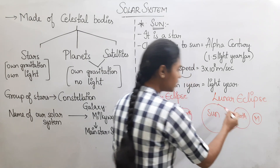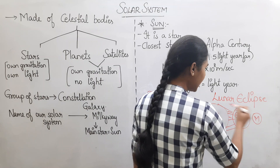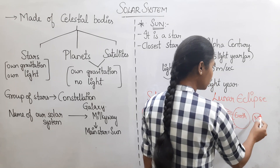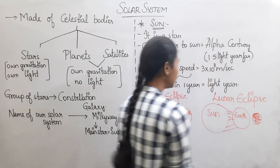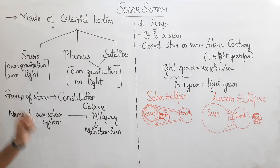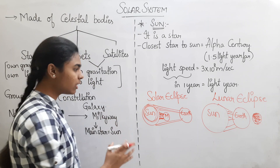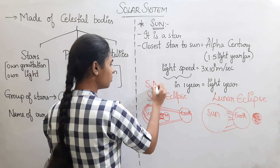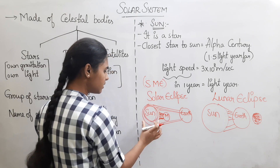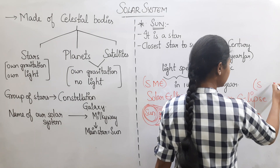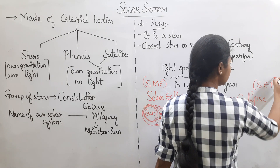Next is the lunar eclipse. In a lunar eclipse, the Earth comes between the Sun and the Moon. The Earth's shadow falls on the Moon.